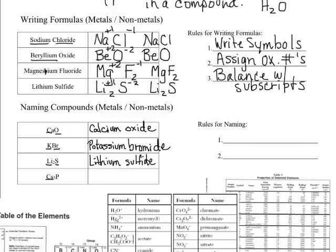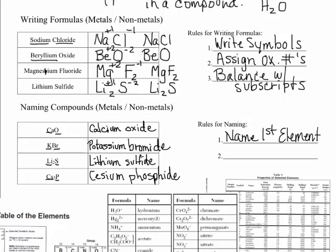The last one here is cesium and then phosphorus. You might think you drop the 'us' and it's phosphide, but it's actually phosphide. So if we had to come up with rules: first, name the first element. And then the second step is to name the second element and change the ending to IDE. That's all there is to it.